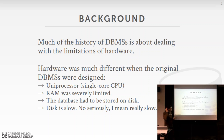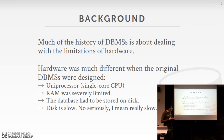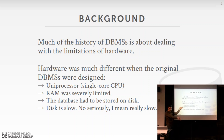Back in the 1970s, they were dealing with single-socket, single-core CPUs with a single program counter. RAM was quite limited — you were lucky to have kilobytes. Because RAM was small, the database had to be stored on disk, which was very slow. These design decisions permeate systems like MySQL, Postgres, and Oracle today — many things that made sense back then may not make sense now.